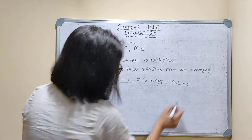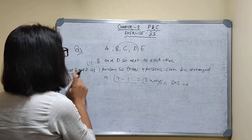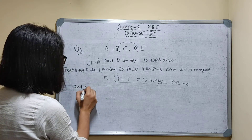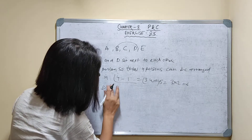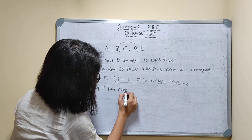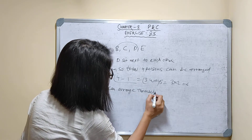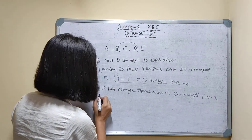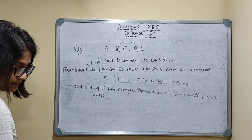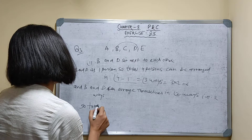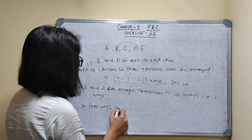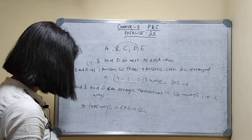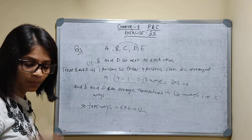That is 3 factorial = 3×2 = 6 ways. Now, B and D can also change positions among themselves, so B and D can arrange themselves in factorial 2 ways, that is 2 ways. So total ways by the multiplication principle of counting will be 6 into 2 — total 12 ways. This is Part 1.